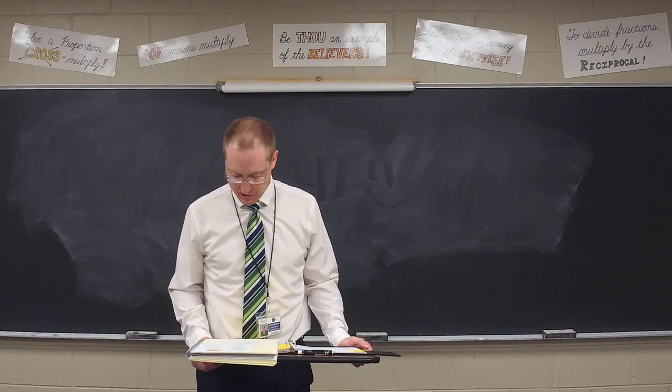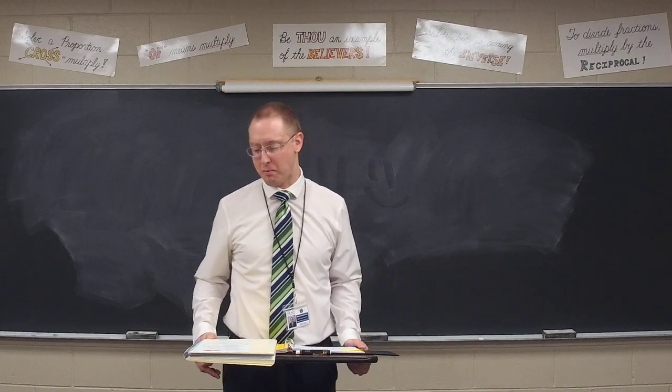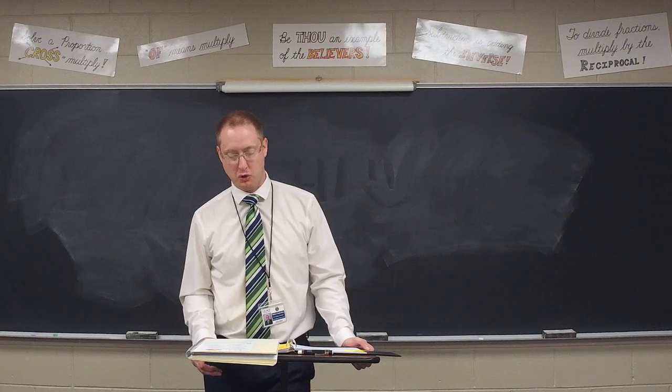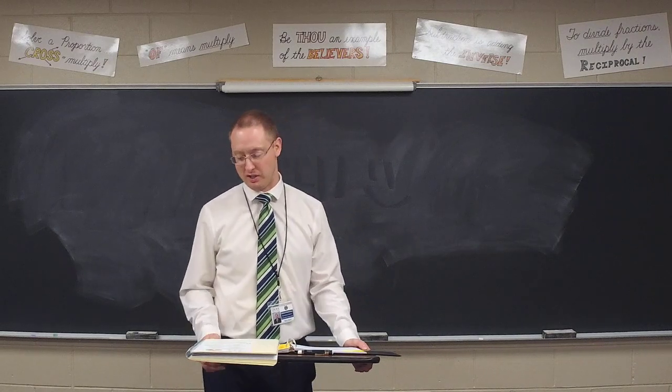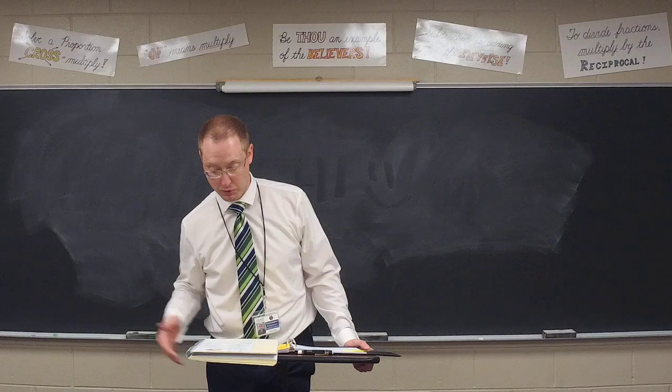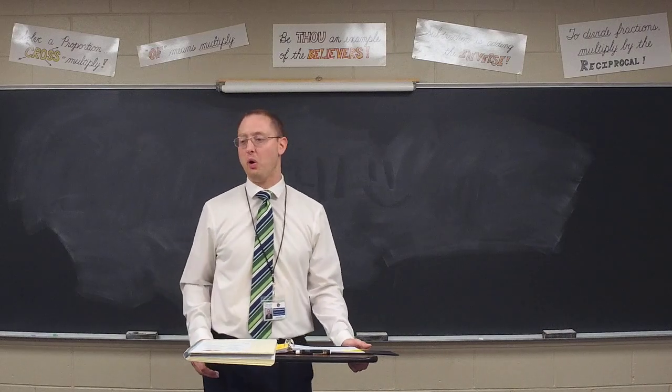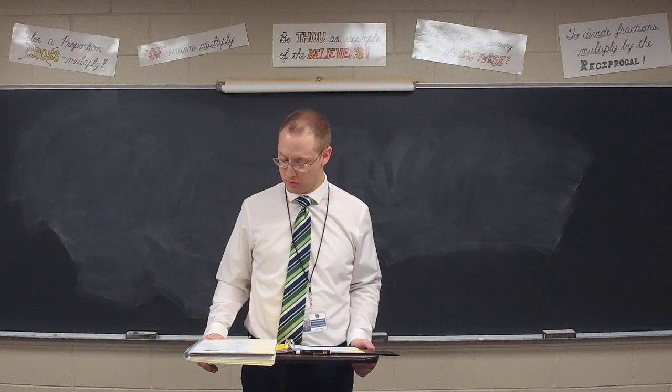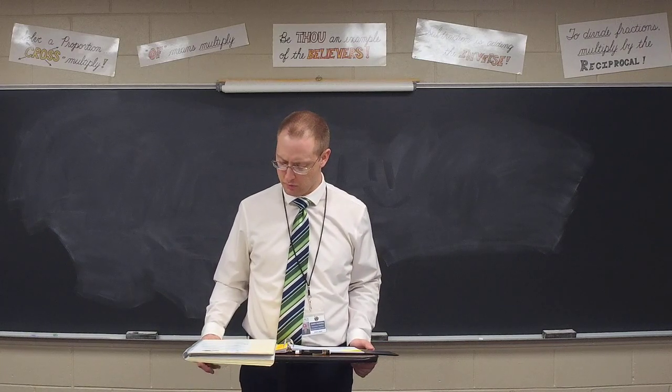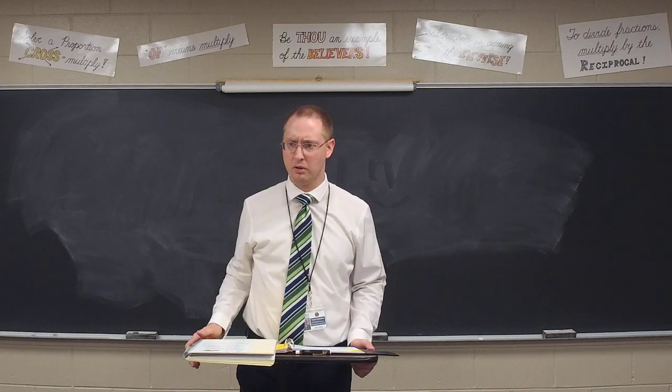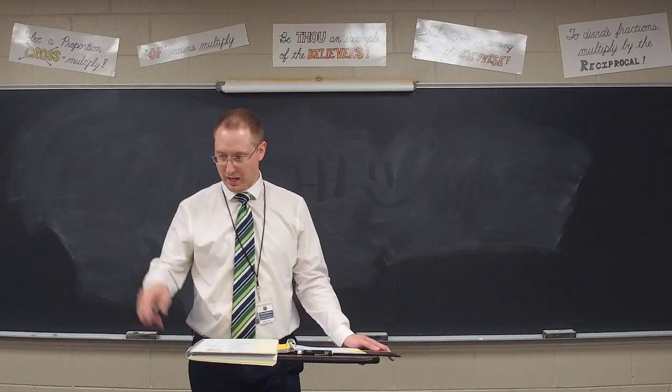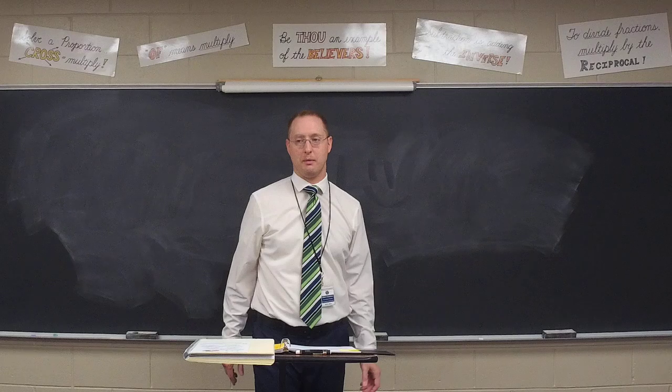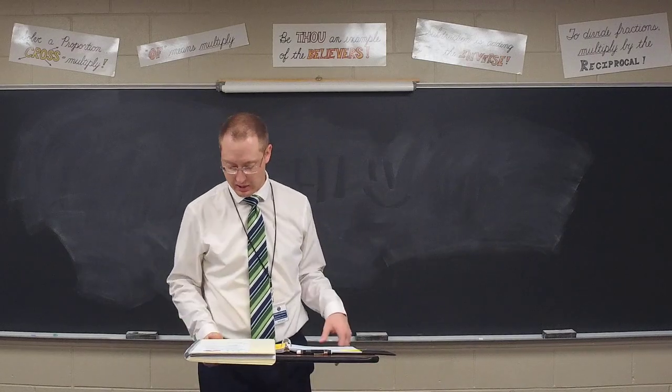Question number one, what principle states that to find the total number of outcomes for two separate events, the number of outcomes of each should be multiplied? Sounds very technical and highfalutin. And we even have a technical highfalutin name for it. We call this what? Michael? Is this going to be the fundamental counting principle? Fundamental counting principle. Fix it there in your book. Fundamental counting principle is basically a fancy way of saying multiply possibilities together to get total possibilities.